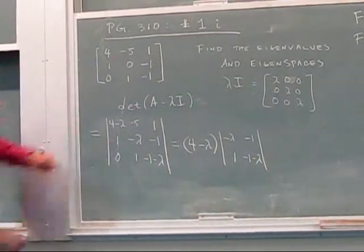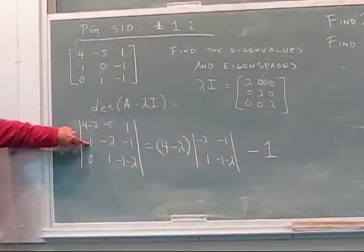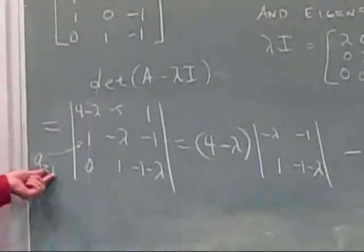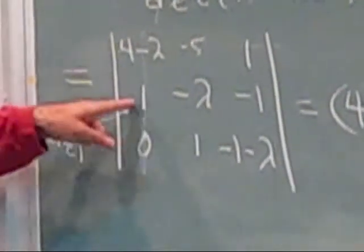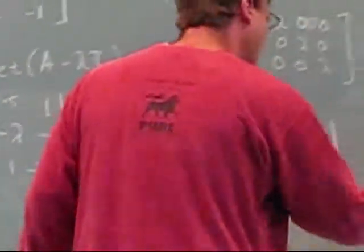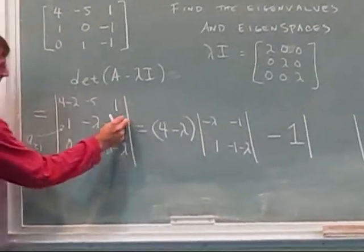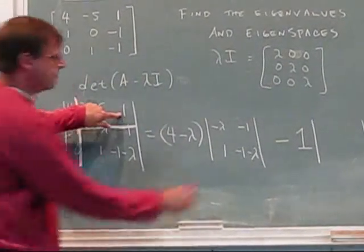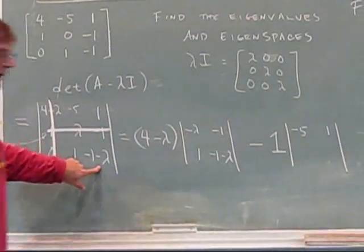And then the next term is this 1 here, so it's minus 1. The reason it's minus 1 is in this slot here, this is the a21. So in my cofactor, I have that negative 1 to the i plus j. This is an odd place, so I get a minus there. Okay, what do I have left when I cross this off and that off? I have this negative 5, 1.